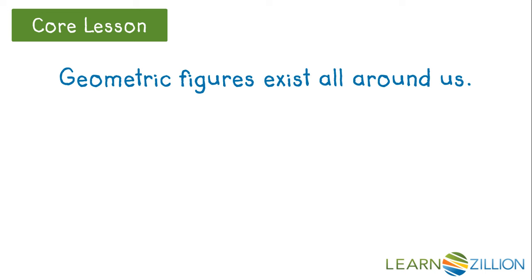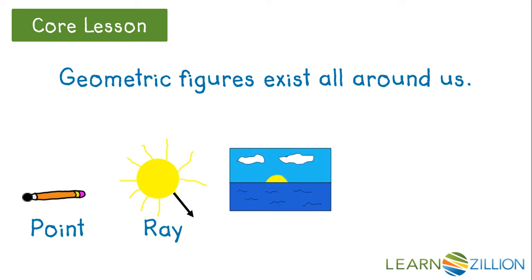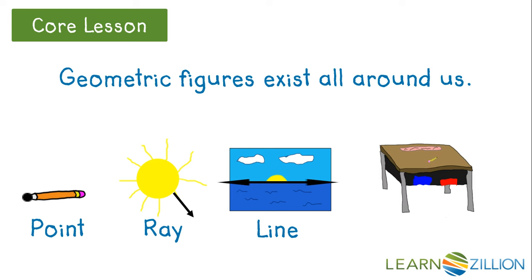Geometric figures exist all around us. The tip of a pencil could be called a point. The light from a sun is called a ray. A horizon could be called a line. And each side of this desk could be called a line segment.